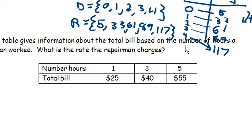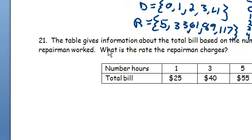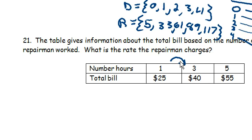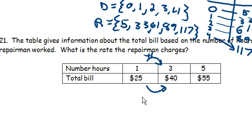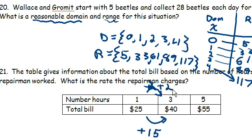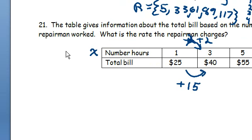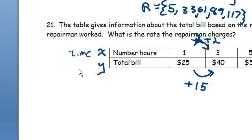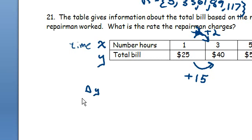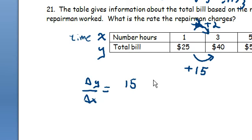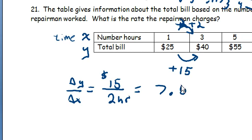Table gives information about the total bill based on the number of hours a repairman worked. What is the rate the repairman charges? So our rate over here is a change of 1. And our rate here is a change of 15. Oh wait, hold on, I'm sorry. That's a change of 2. To get from 1 to 3, you have to move two spots over. Let me rewrite that. Change of 2. So our change, the rate the repairman charges... x is usually always our time variable. So we know that's going to be time. And our total bill will be our y. So we want our change in y over our change in x, which would be $15 over 2 hours. And that equals $7.50 per hour.